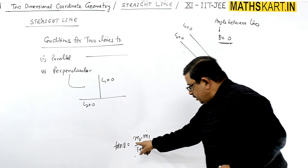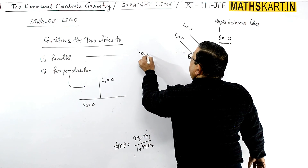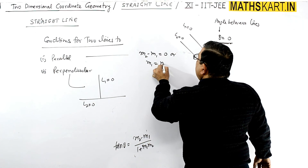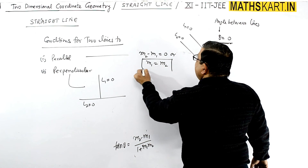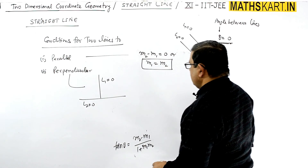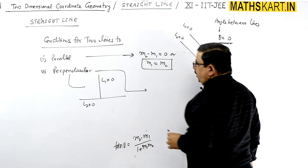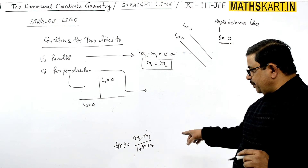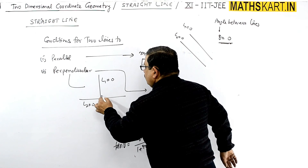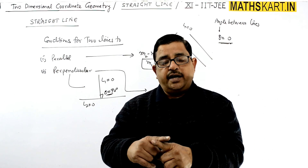If two lines are parallel, the angle between them is 0, so tan(θ) = 0. For tan(θ) = 0, the numerator must be zero: m2 − m1 = 0, which gives m1 = m2. So if two lines are parallel, their slopes are equal.